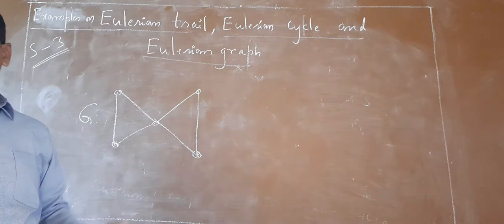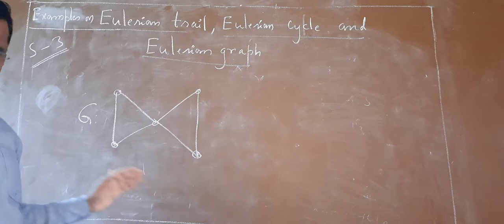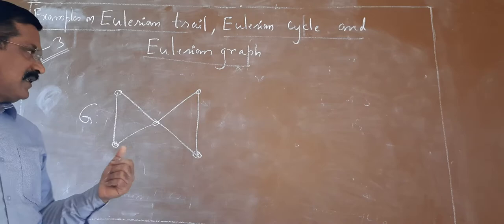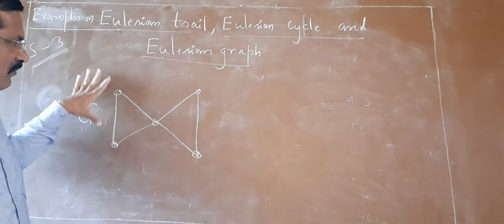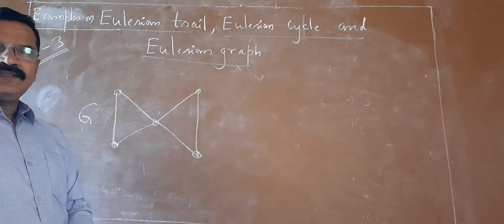Now, some observations. This is an example of an Eulerian graph. So clearly you can say an Eulerian graph is always connected. If it is disconnected, you cannot come to the same point where you have started your journey, or you cannot come to the same point where you started your tracing. That's why an Eulerian graph must be a connected graph. This is one simple observation. Let me think of another one. You know already what an isolated vertex is — a vertex whose degree is zero.